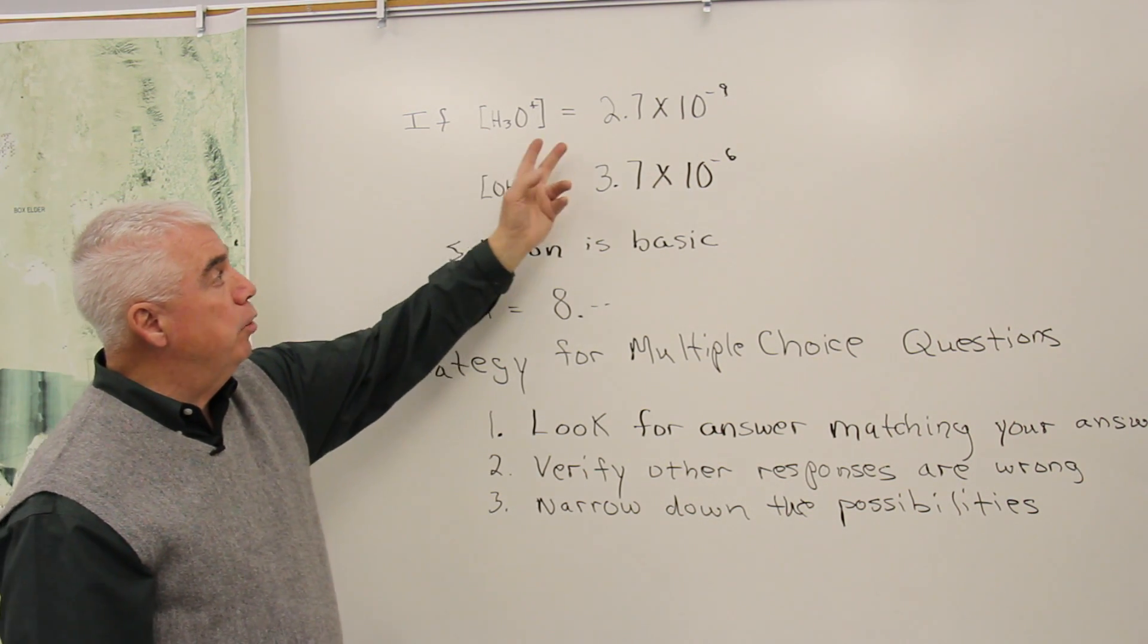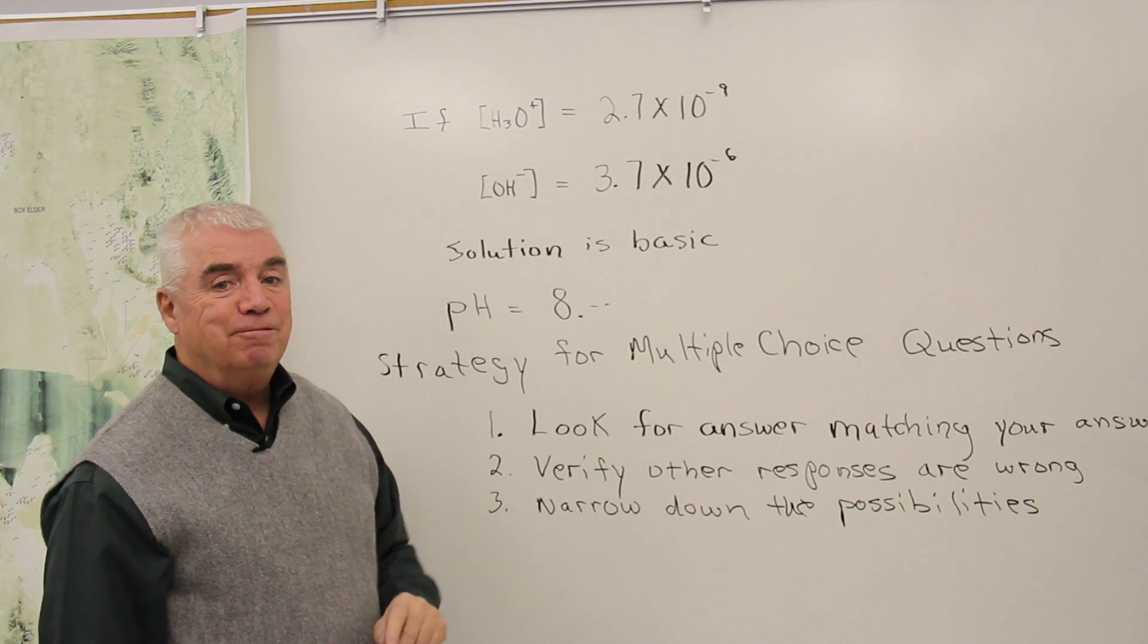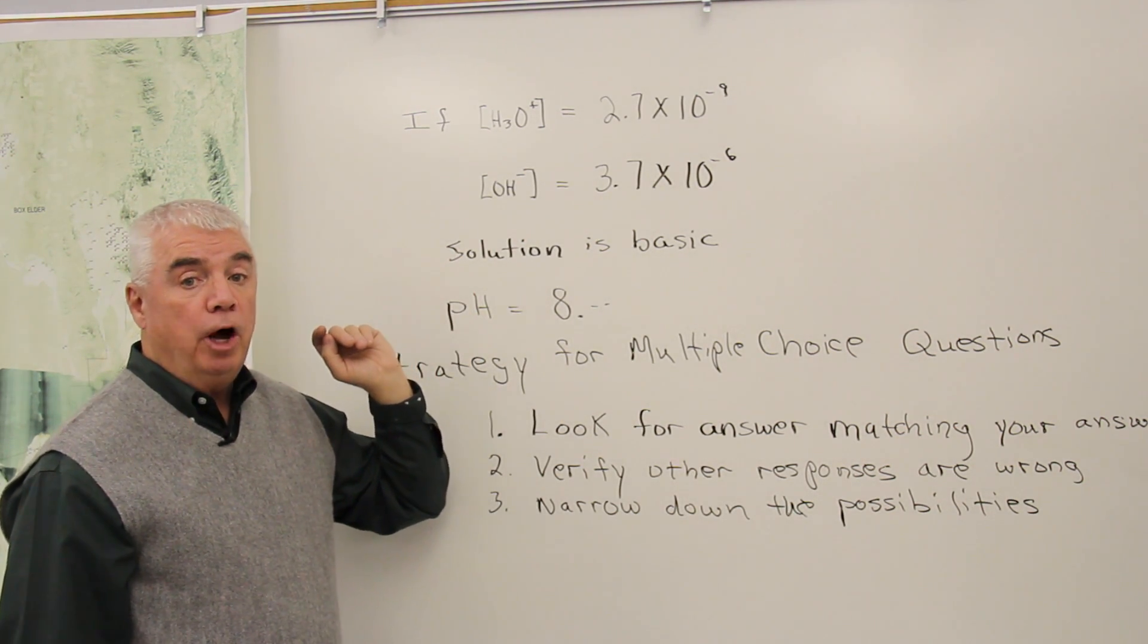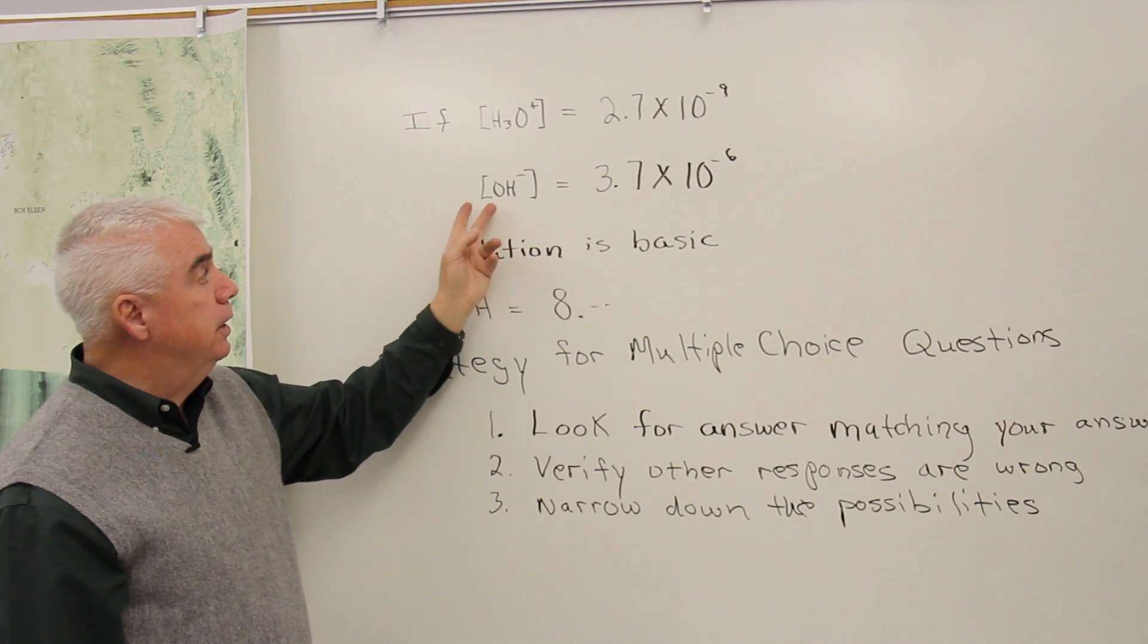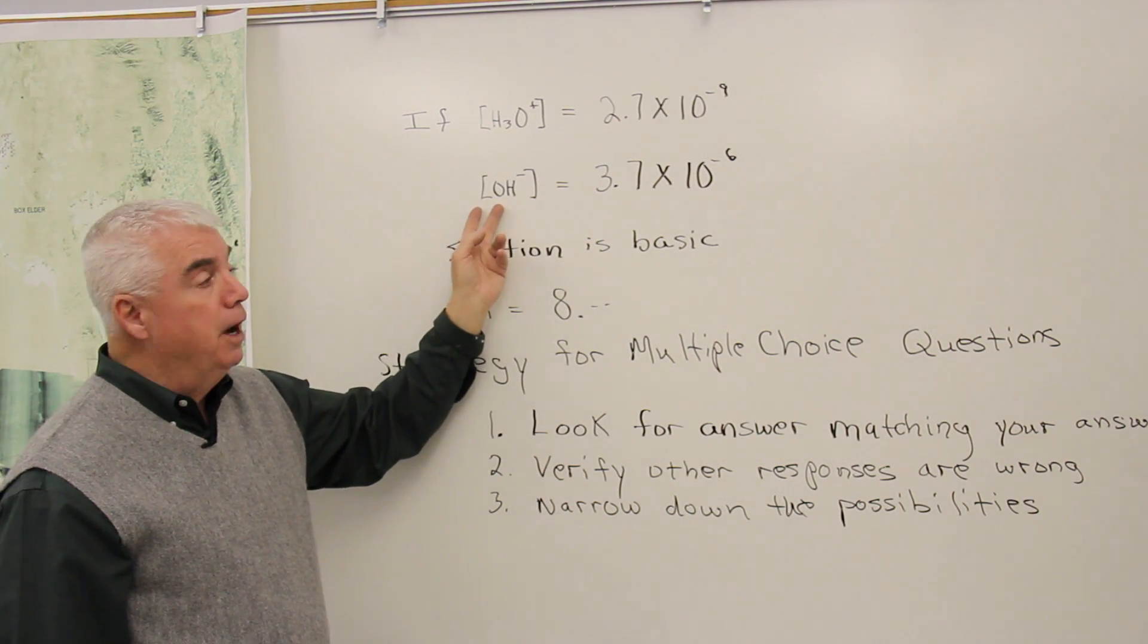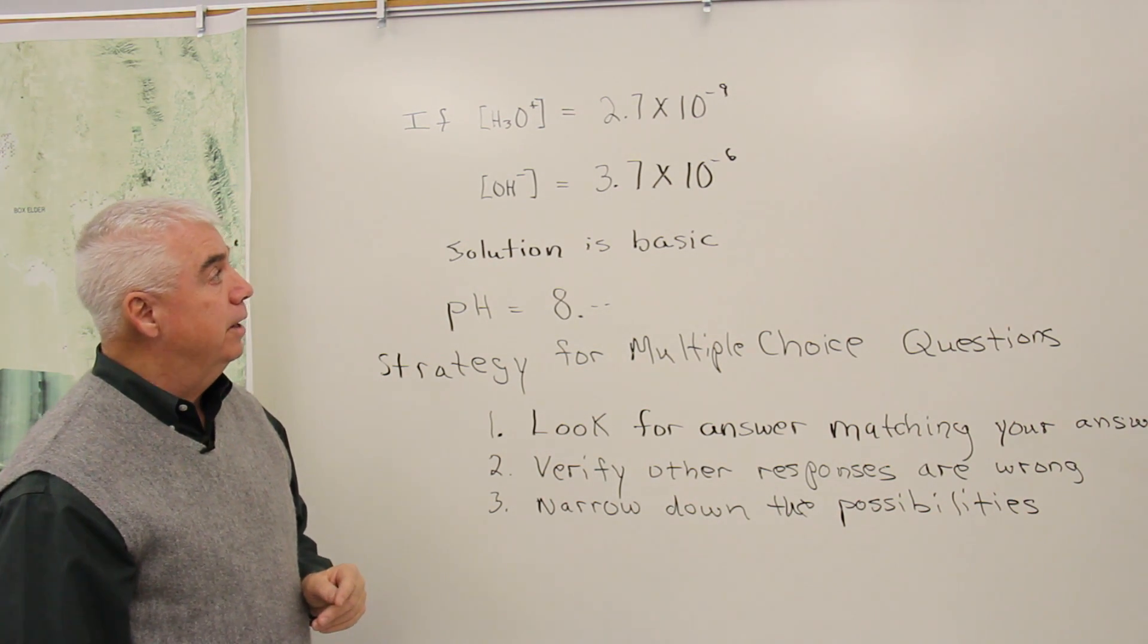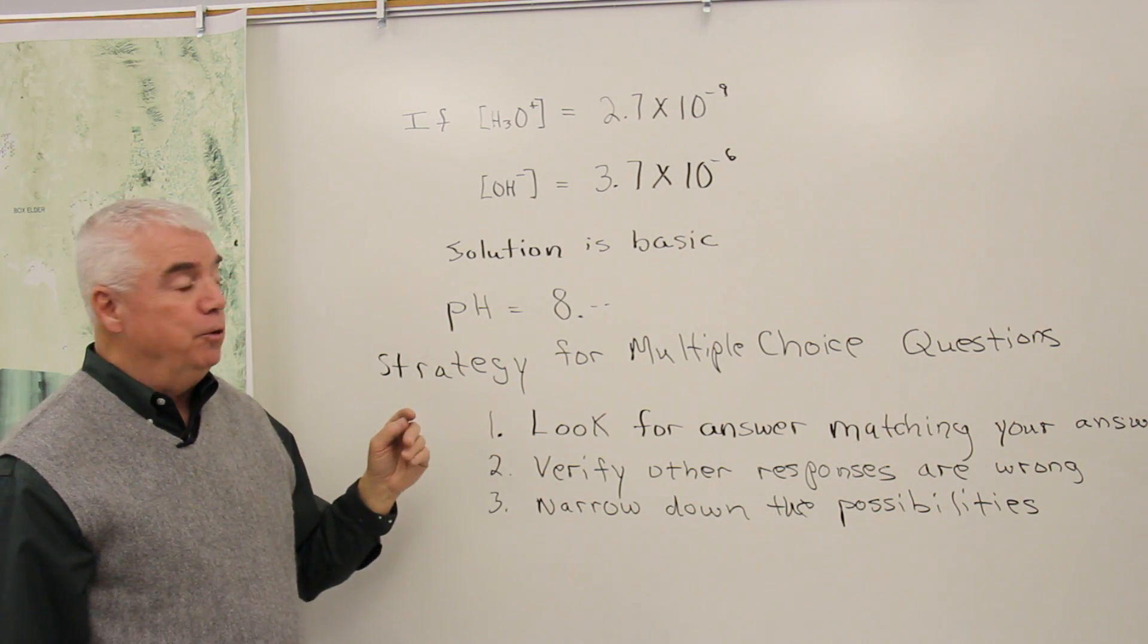If I'm given H3O plus concentration of 2.7 times 10 to the minus 9, we could use the ion product of water equation and solve for OH minus. We know that the product of these two is 10 to the minus 14th. And so we're able to do that.